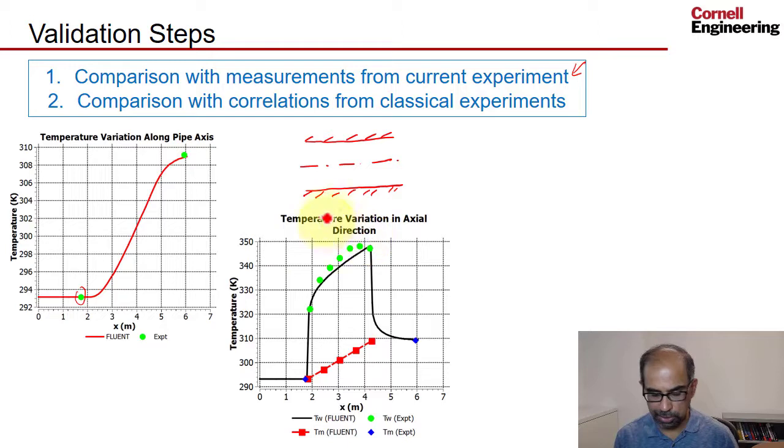This plot shows the temperature variation along the wall. So that's this black line here from the simulation and then the corresponding measurements. There are probes along the wall here in the heated section. And again, you can see it captures that reasonably well.